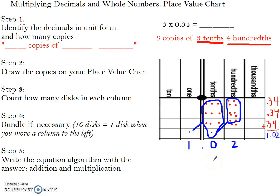For the multiplication sentence or equation, you would take what we have up here, which is 3 times 0.34 equals our answer here, 1.02, or 1 and 2 hundredths.